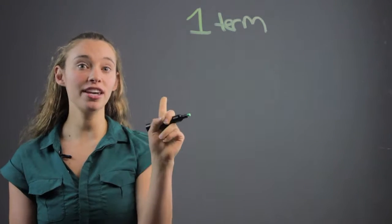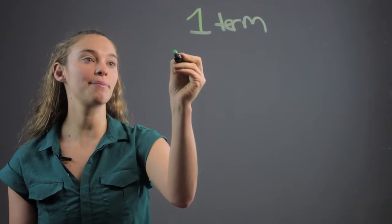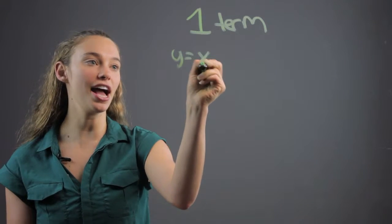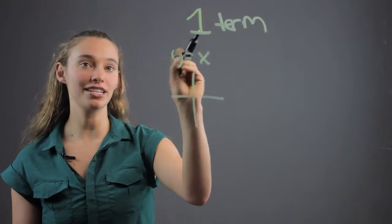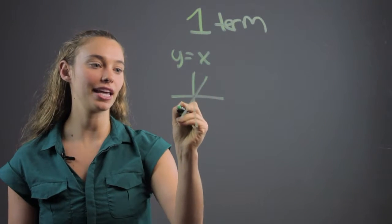For example, if it's a one-degree monomial, which is something like y equals x, you'll know that it's going to go in one direction and it's going to be a straight line.